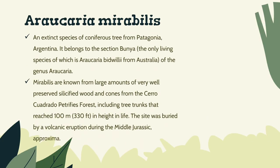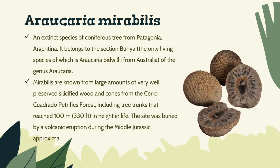Araucaria Mirabilis. An extinct species of coniferous trees from Patagonia, Argentina, it belongs to the section Bunya of the genus Araucaria. Mirabilis are known from large amounts of very well-preserved silicified woods and cones from the Cerro Cuadrado petrified forest, including tree trunks that reached 100 meters (330 feet) in height in life. The site was buried by a volcanic eruption during the Middle Jurassic.